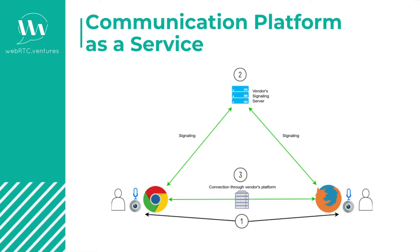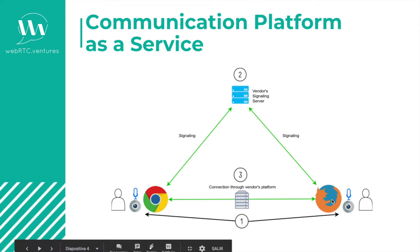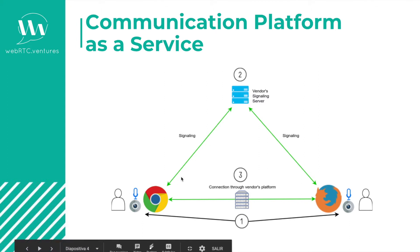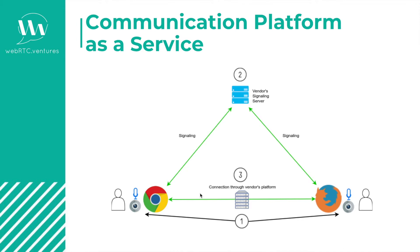So the way in which a call using a CPaaS will work is: first of all, both peers get access to their media devices, and then the signaling process starts through the vendor's signaling server.